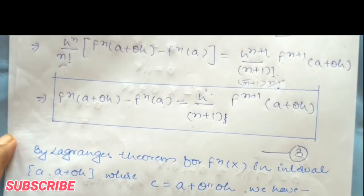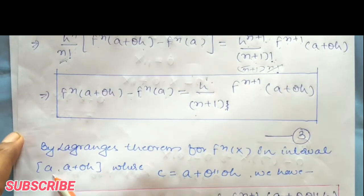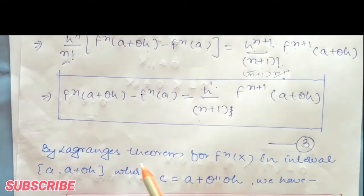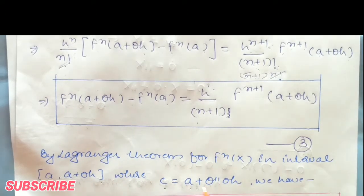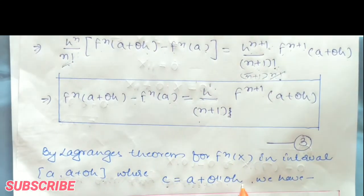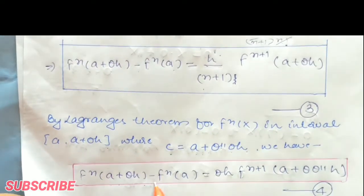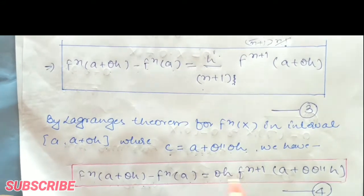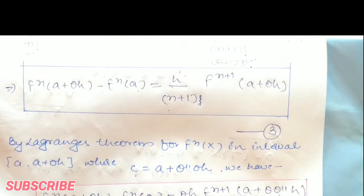We know from the mean value theorem that for f^n(x), if it varies, we can write: f^n(a + θh) − f^n(a) = θh · f^(n+1)(a + θ·θh). This is equation 4.